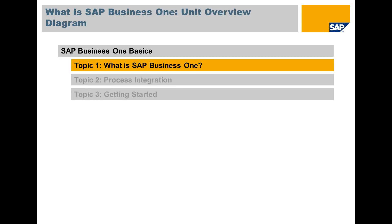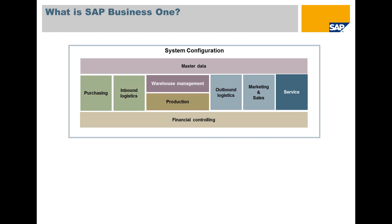So, we'll start off with our first topic, which is: what is Business One? This is the system configuration, and in Business One, it's a management solution designed for small and medium-sized companies. Business One gives you instant access to real-time information through one single system. The application is divided into a number of modules, each covering a different business function.